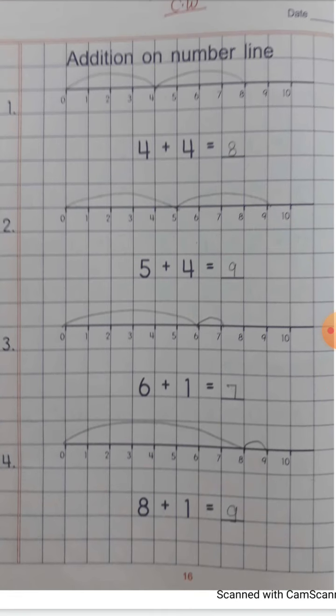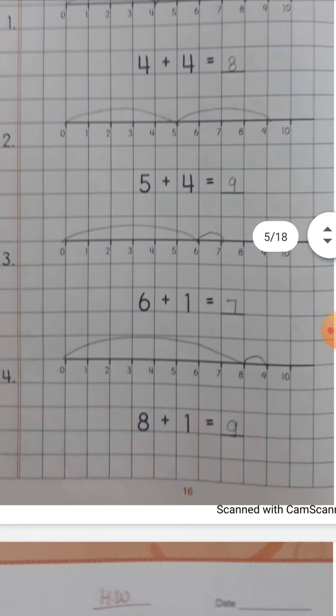इसी तरह next question है, देखिए — 5। तो 0 से आप लोग 5 पर चले गए हैं। 5 में कितने number हमें और प्लस करने हैं? 4। तो 6, 7, 8, 9। 4 नंबर होंगे, 9 तक आप लोग curve ले जाएंगे। तो हम लोग का answer क्या हो जाएगा? 9। Next इसी तरह 6 है — 6 में 1 प्लस किया। तो क्या हो गया? 7। ओके?